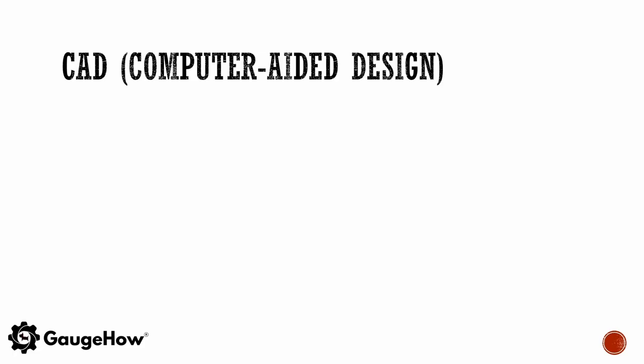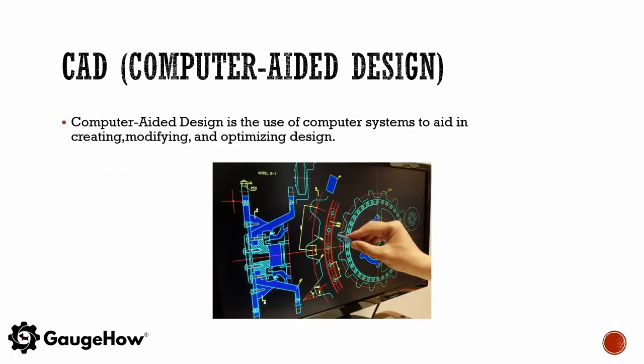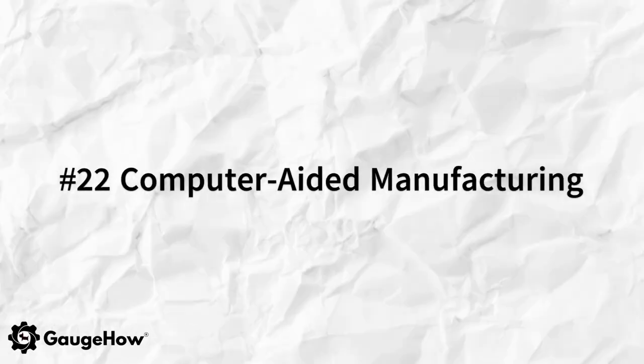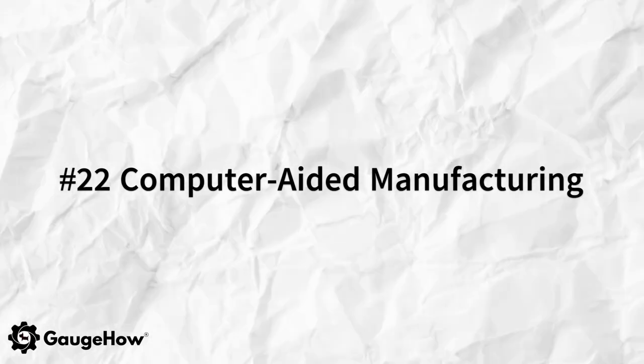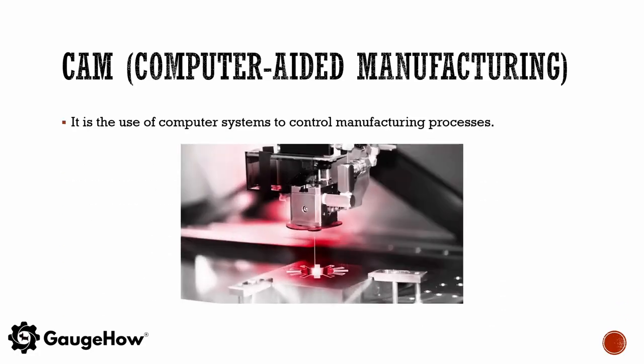Computer aided design (CAD) is the use of computer systems to aid in creating, modifying and optimizing design. Computer aided manufacturing (CAM) is the use of computer systems to control manufacturing processes.